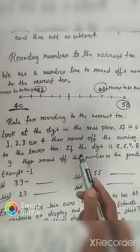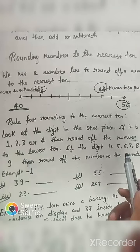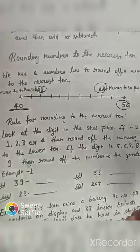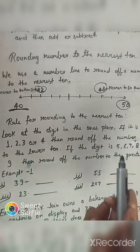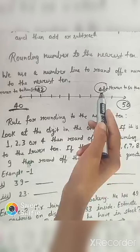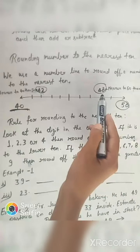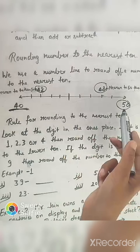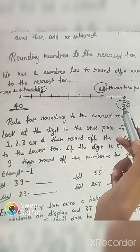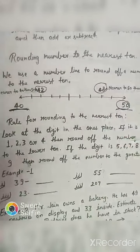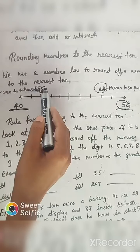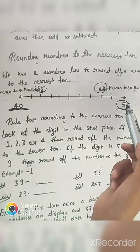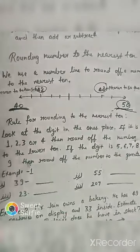And if the digit is 5, 6, 7, 8, or 9, then round off the number to the greater ten. In 48, the ones digit is 8. So 48 will be rounded up to the greater ten, that is 50. So 42 is rounded down to 40, and 48 is rounded up to 50.